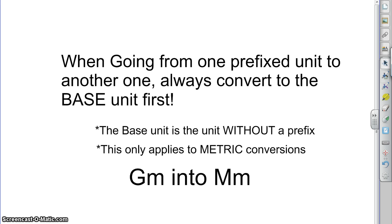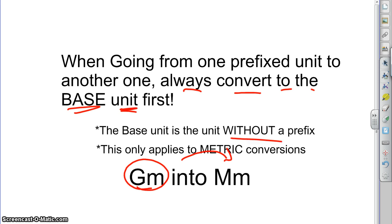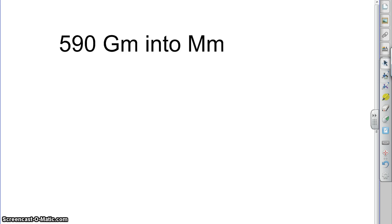Now we're back. We have this example — we have to convert to the base unit first. So what does that mean? We have gigameters as the unit we're starting with. We want to get it into megameters, but we don't necessarily know how to do that directly. So what we're going to do, like it says, is always convert to the base unit first — the unit without a prefix. What is gigameter without a prefix? It's meter. We can get gigameter into meter — we've learned the rules to do that. And then we can take meter and turn it into megameter. We've learned how to do that as well. It's a bit of a circular process — you hop onto the base unit in order to get to the new unit you want.